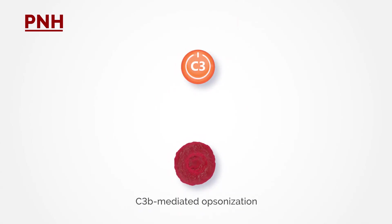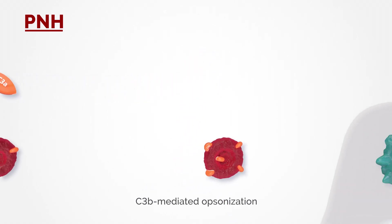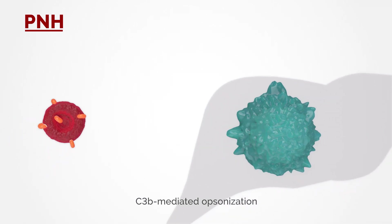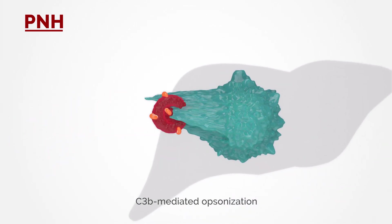At the same time, extravascular hemolysis is caused by C3B being deposited on the surface of defective red blood cells, tagging them for removal and resulting in their destruction in the liver and spleen.